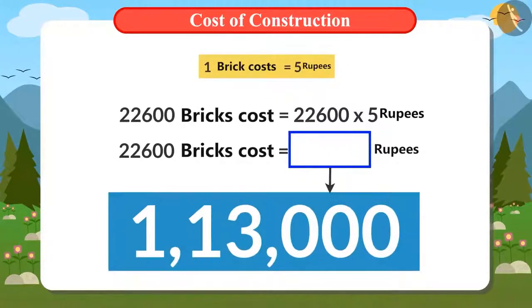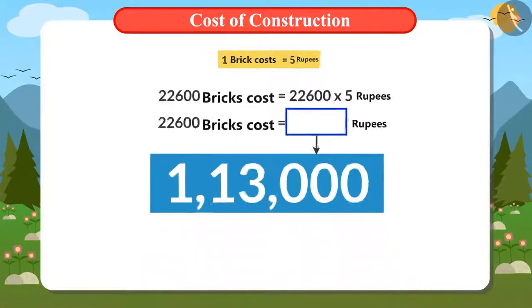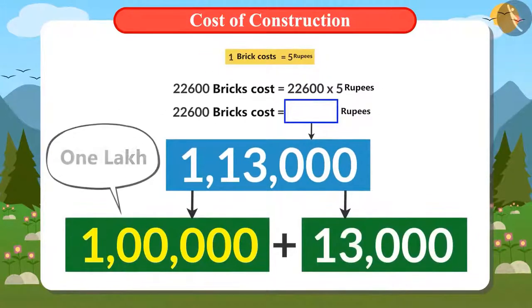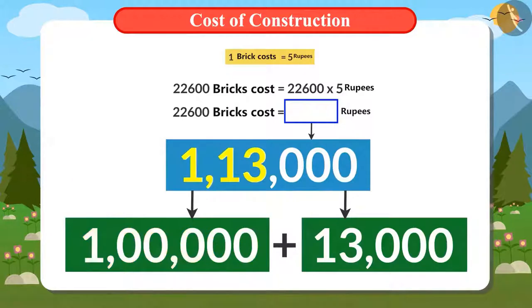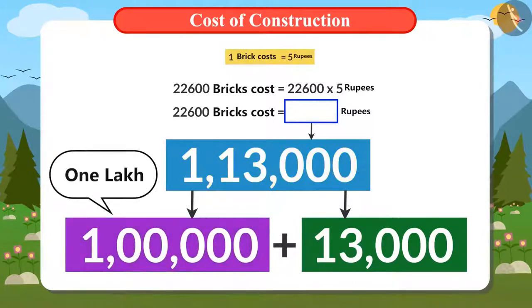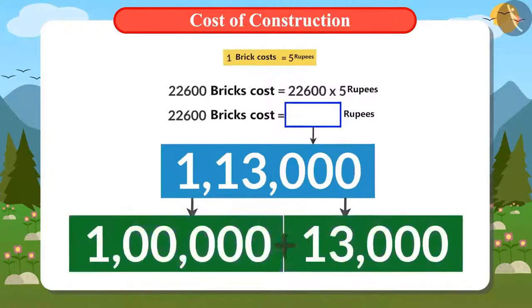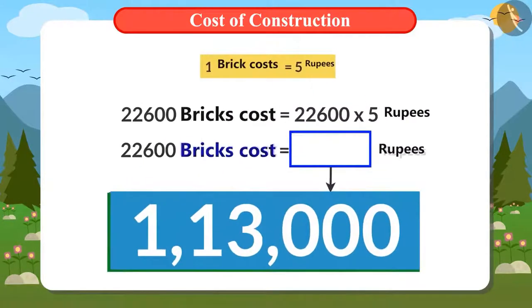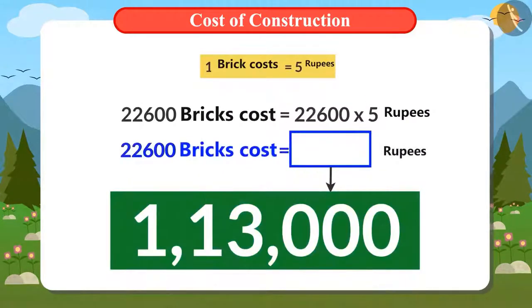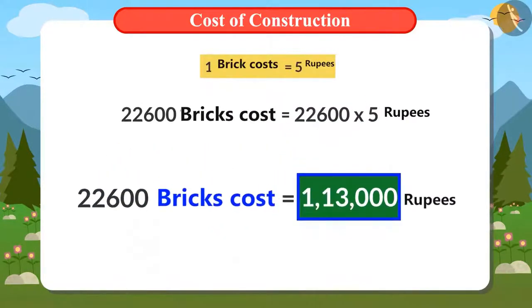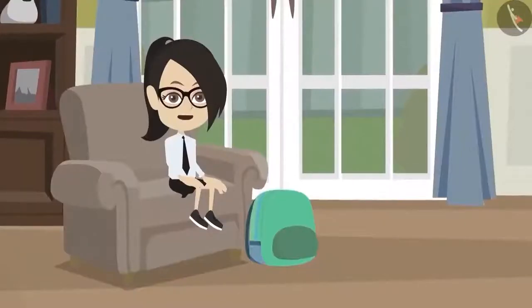Do you know how to read it? Let me tell you. 100,000 is read as 1 lakh. So 113,000 is read as 1 lakh 13,000. This means the total cost of 22,600 bricks will be 1 lakh 13,000 rupees.